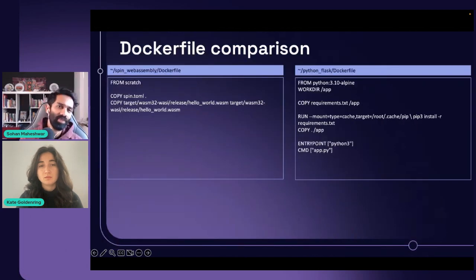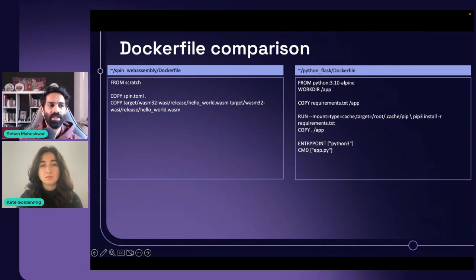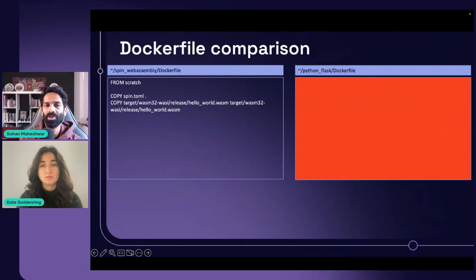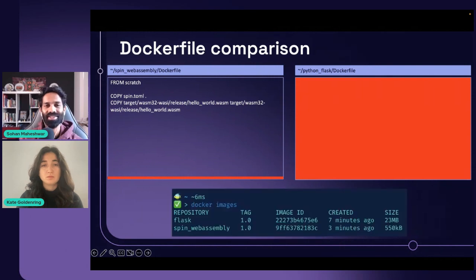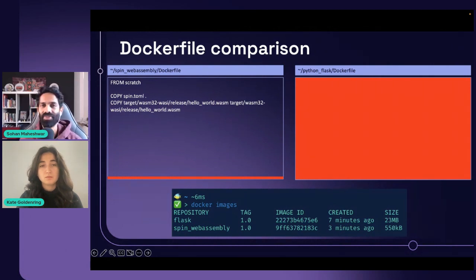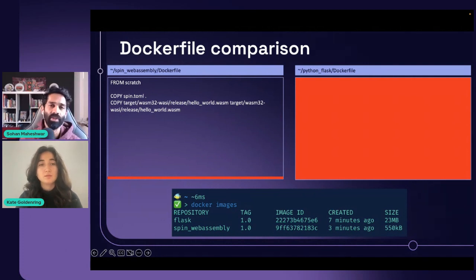To give you a visual comparison of how a WebAssembly file looks compared to a Docker file: we benchmarked a simple Python Flask app. The Docker file was significantly larger than the equivalent Spin app — we saw a difference from 23 MB to 550 kilobytes. That is a significant difference in the lens of being more energy efficient with writing your code.